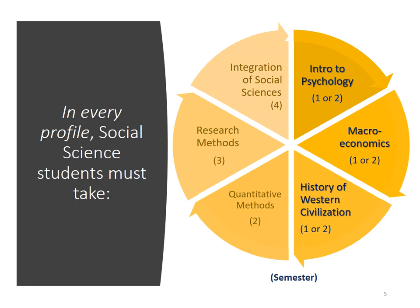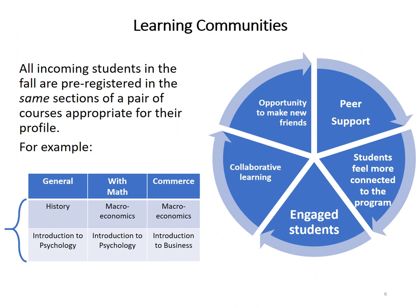Irrespective of their chosen profile, students in year one have to take a set of required introductory courses in history, psychology, and macroeconomics. For these courses, students are pre-registered in profile-specific sections, grouped with other classmates in a way that facilitates the creation of learning communities. This model gives students an opportunity to form cohesive study groups, allowing them to learn collaboratively and make friends.